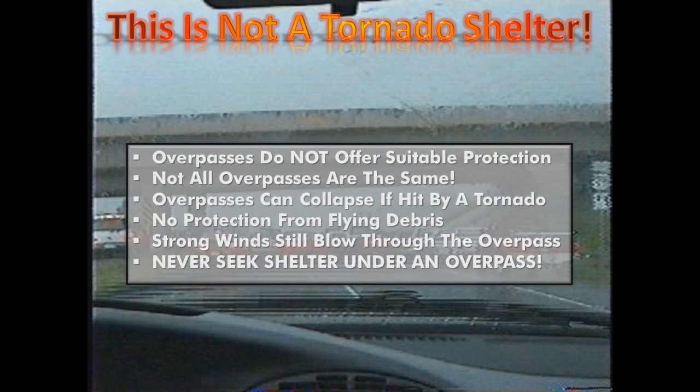Overpasses are not tornado shelters — this is extremely dangerous and the overpass offers little to no protection. While many of us have seen the video where people took shelter under an overpass as a tornado went over it, we must keep in mind that all overpasses are different. Hiding next to the beams at the top of an overpass is also not safe, as it is possible the overpass could collapse if hit by the tornado. The overpass offers no protection from flying debris and winds. No matter what anyone says, taking shelter under an overpass is extremely dangerous and you should not do it.